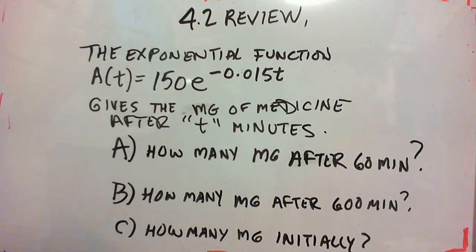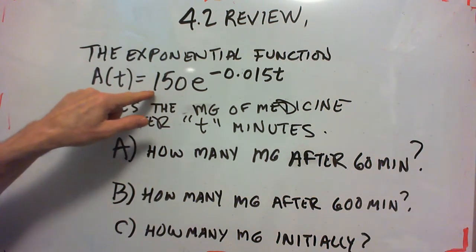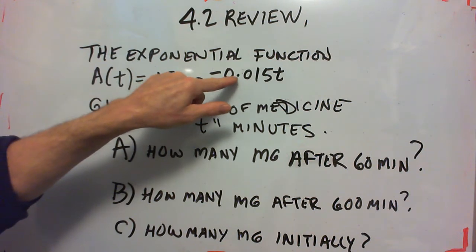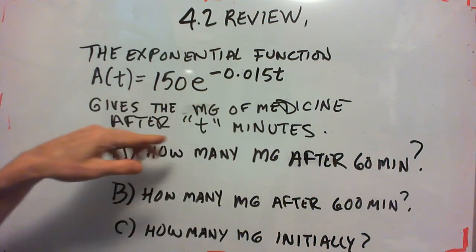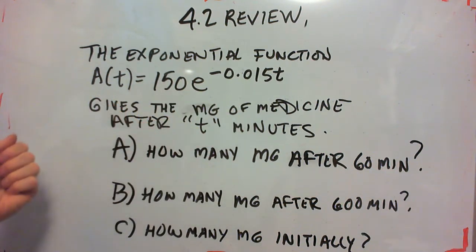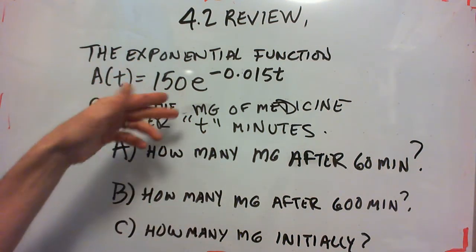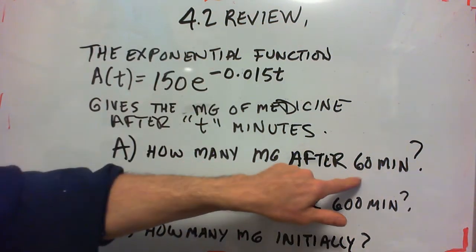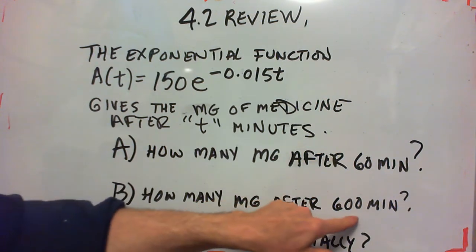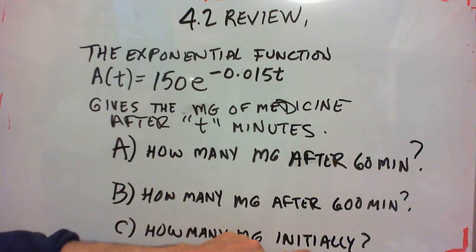This next problem is like number 3 of the homework and also I believe it was number 7 in WebAssign. We have an exponential function, A as a function of t equals 150 e to the negative 0.015 t, which gives the milligrams of medicine after t minutes. So how many milligrams after 60 minutes, how many milligrams after 600 minutes, and then I added one more question, how many milligrams initially?